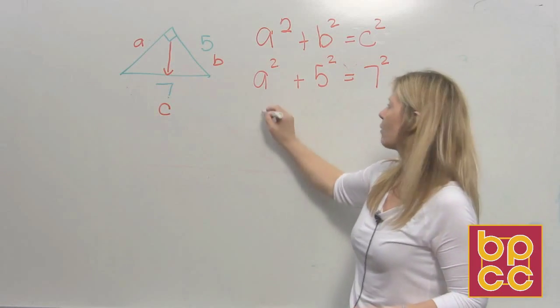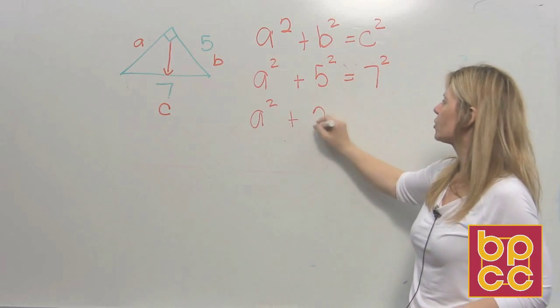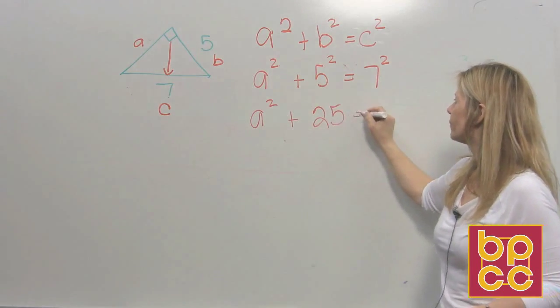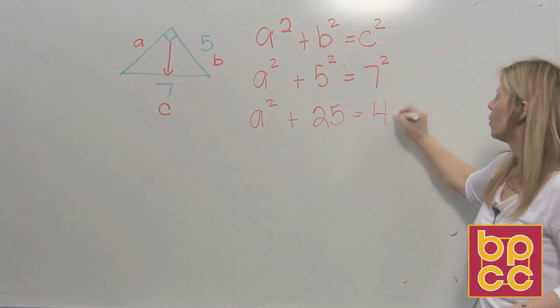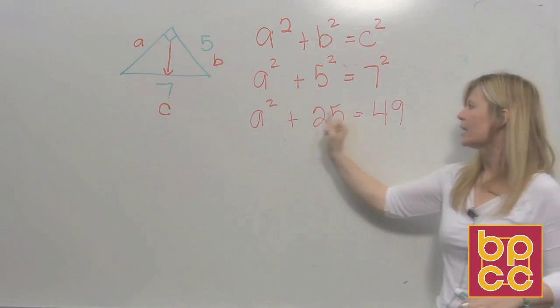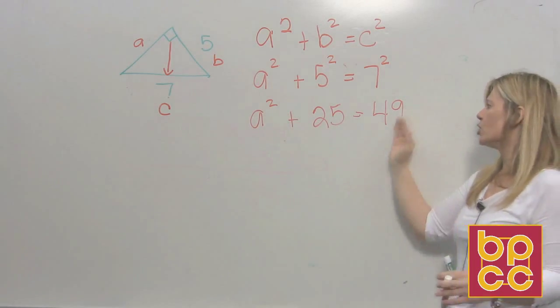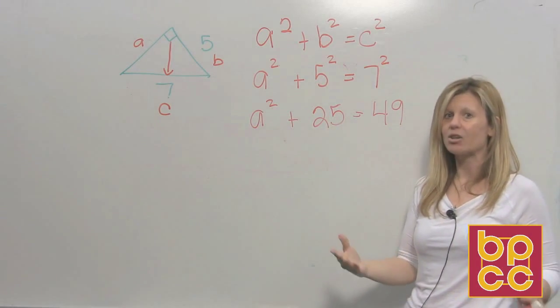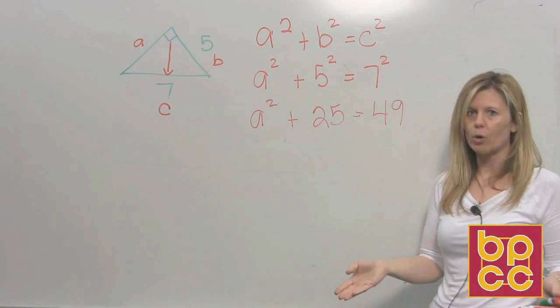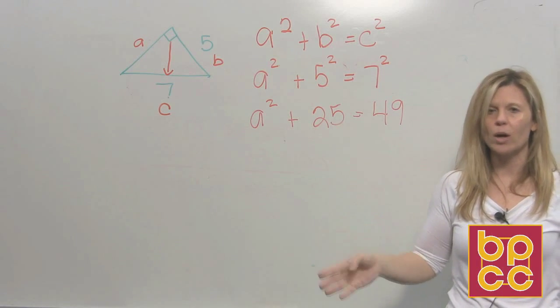Now, can we do anything with A squared? Not right now. Plus, five squared is 25. Seven squared is 49. It's an equation. It has an equal sign. It's quadratic. It's squared. So the decision is, do you want to set it equal to zero and factor it, or do you want to do the square root method? We found out the square root method is a lot quicker and easier.